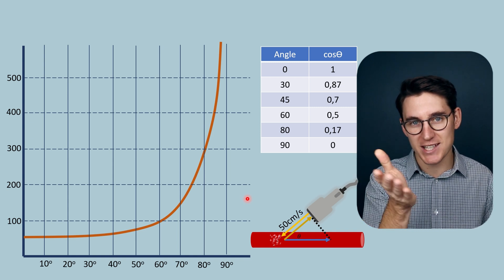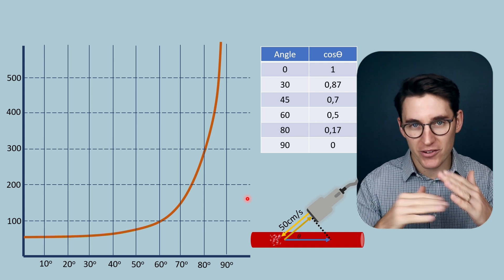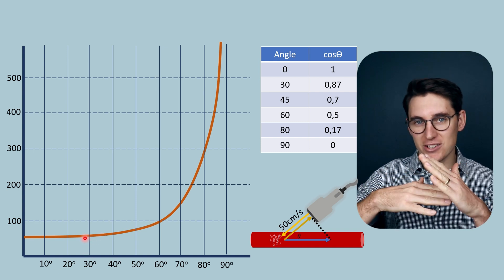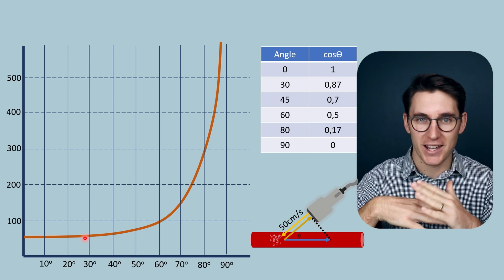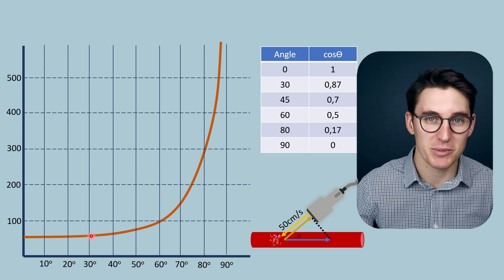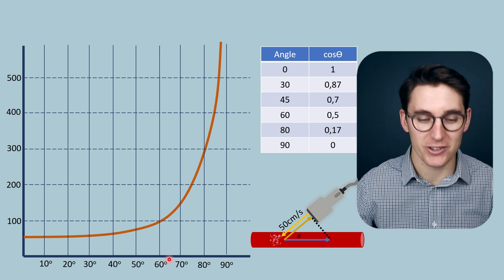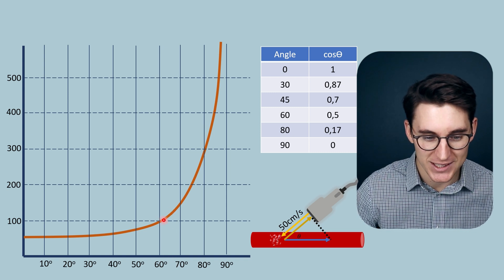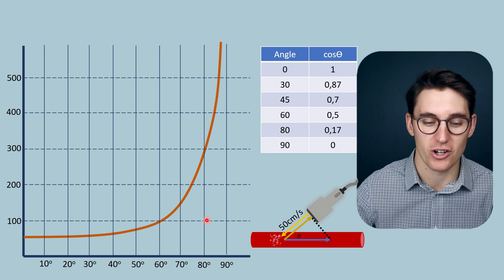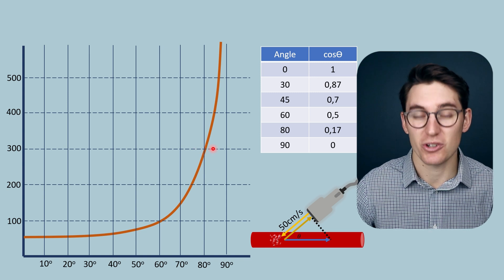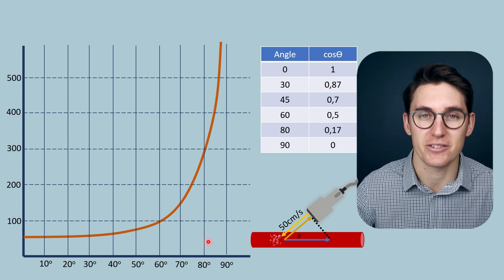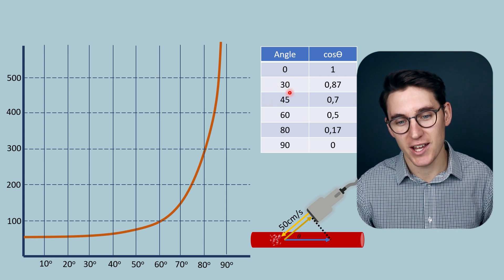The issue arises when setting our ultrasound machine's angle — we'll never have it perfectly accurate. If we're using a 30 degree angle and we're off by 5 degrees, the calculated value at 30 degrees versus the actual at 35 degrees is very similar — perhaps 55 versus 60 cm/s. As this angle increases and we're off by 5 degrees, the actual and calculated values start becoming very different. Above 60 degrees there's a real exponential curve, and at 80 degrees a 5 degree error results in a calculated velocity over 100 cm/s faster than the actual value.